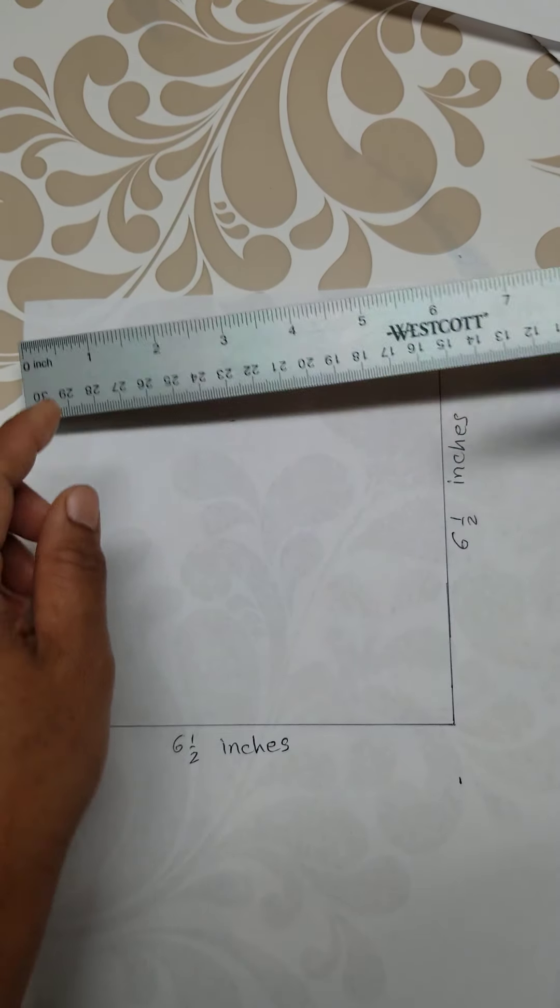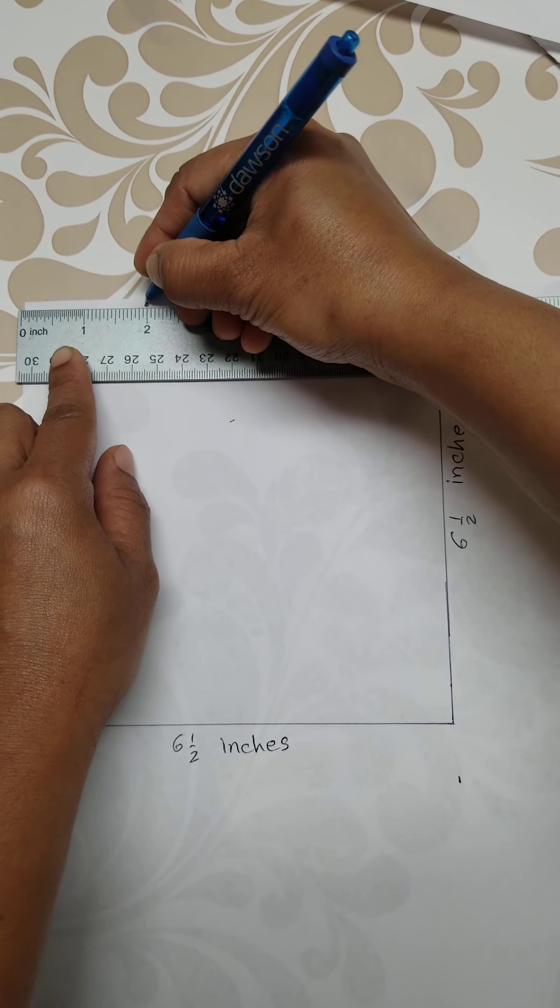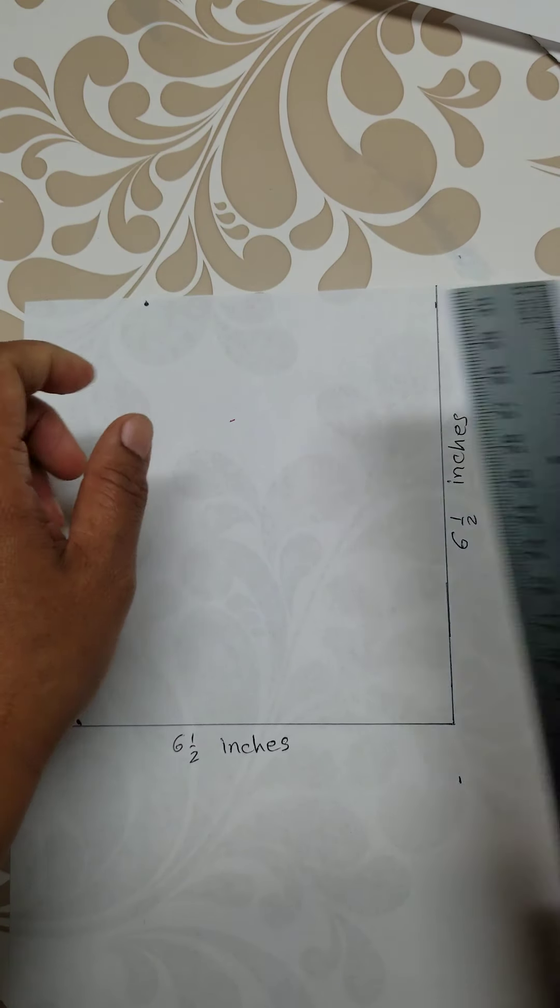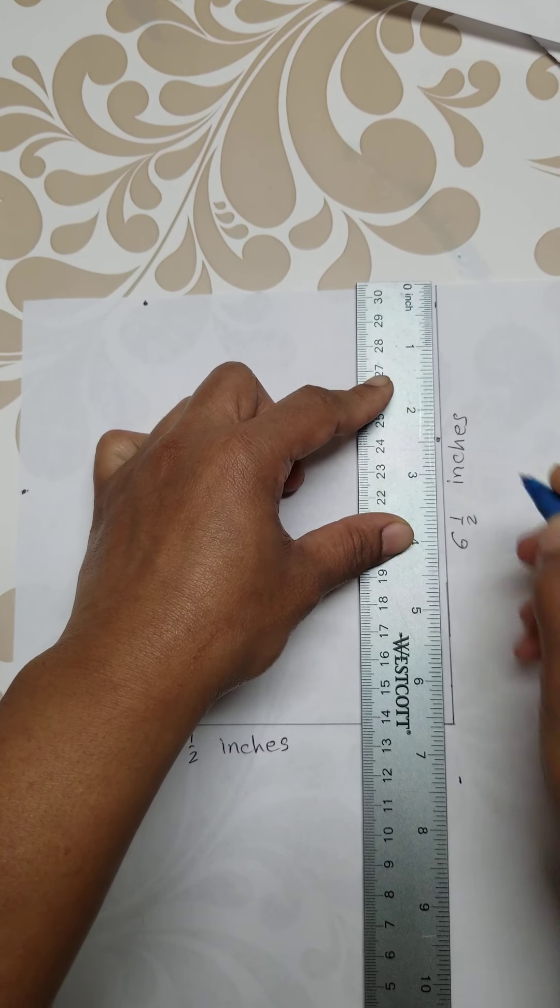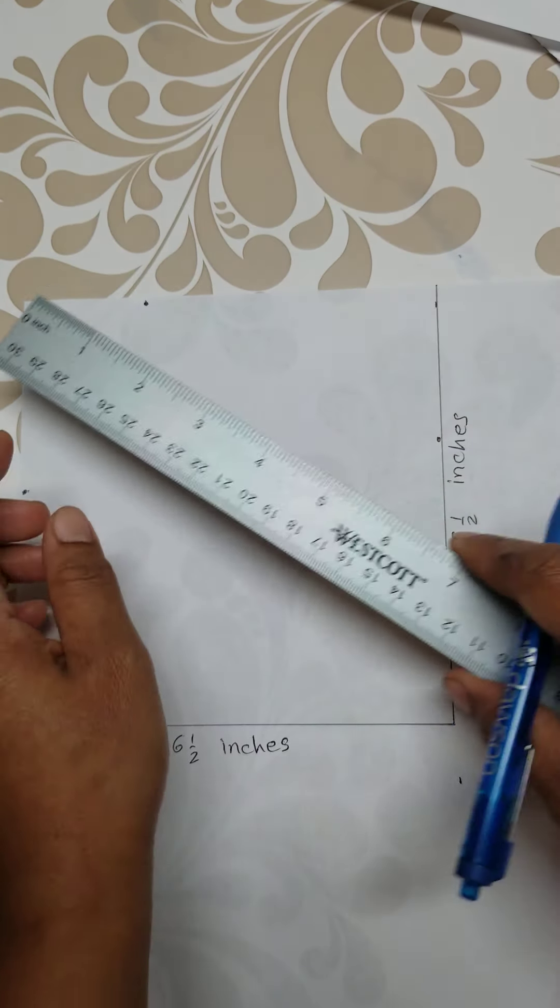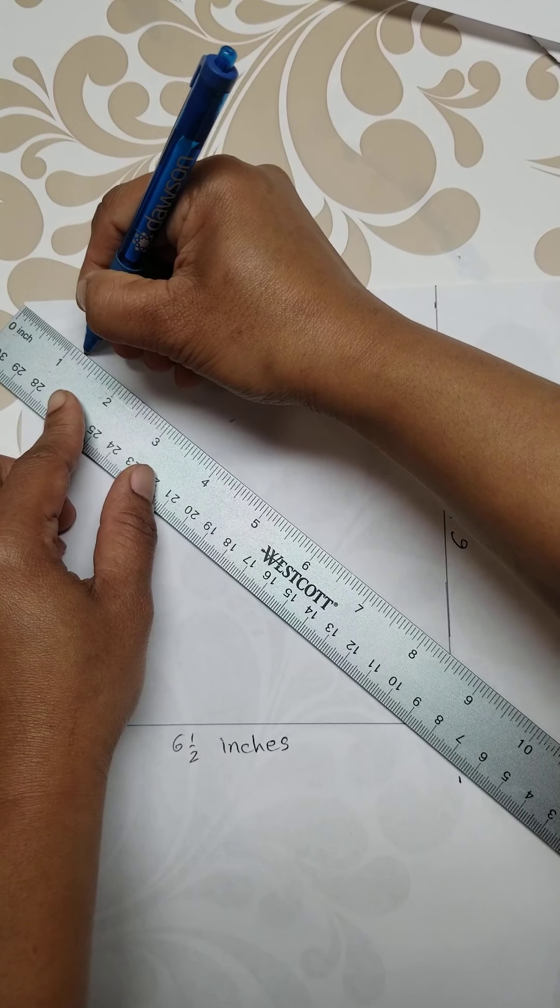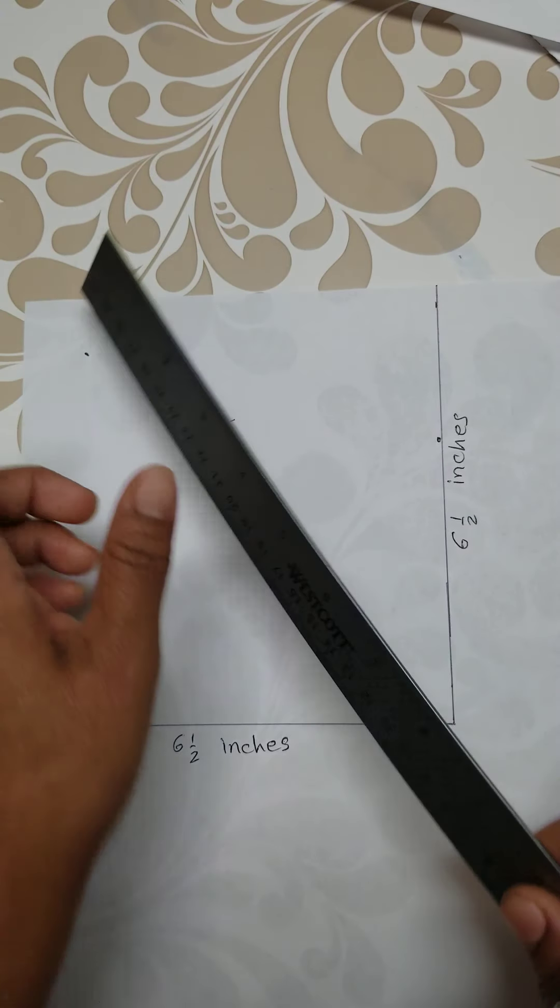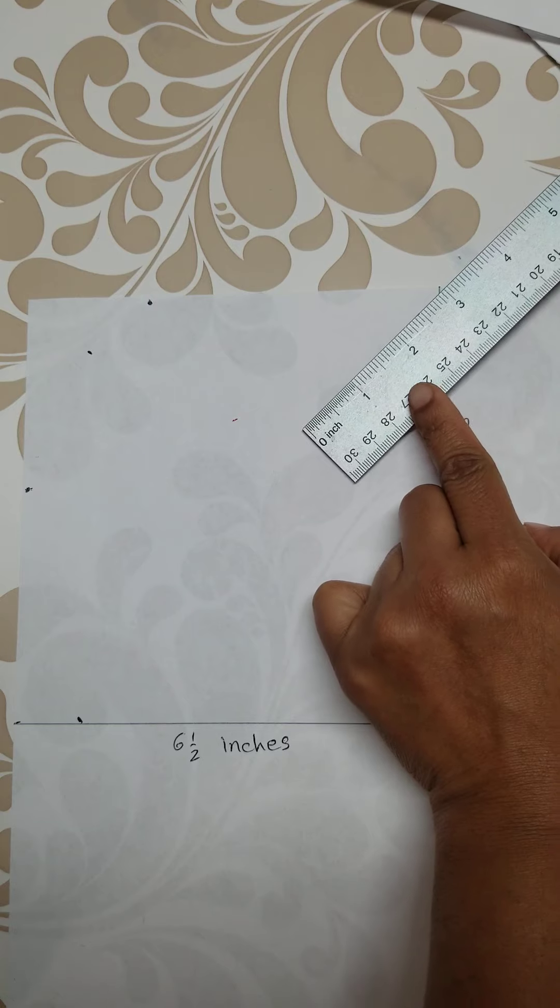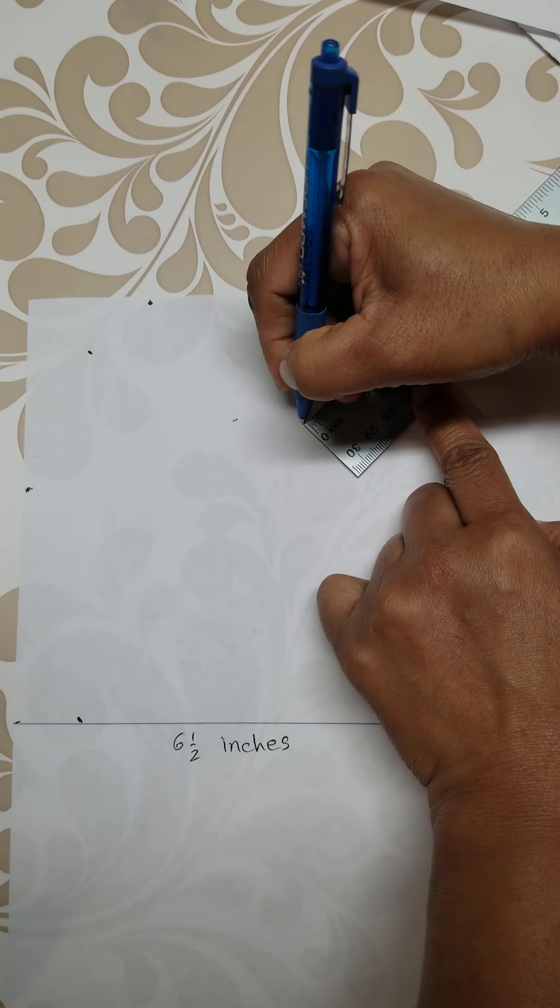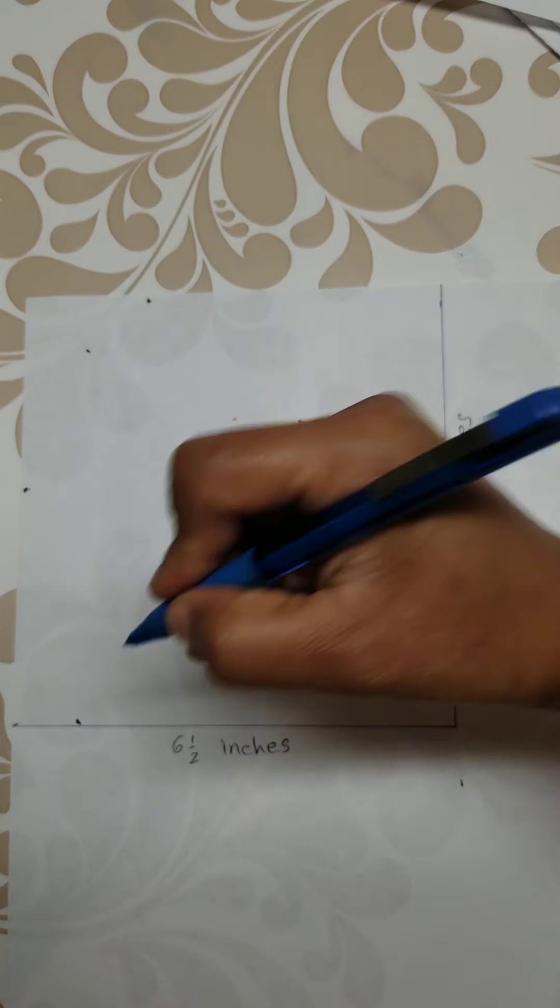From this corner, from top corner, one and a quarter. And this corner is three. You will see. Join all the dots like this.